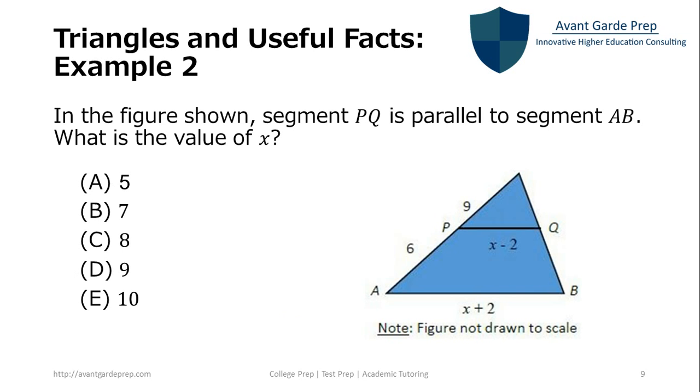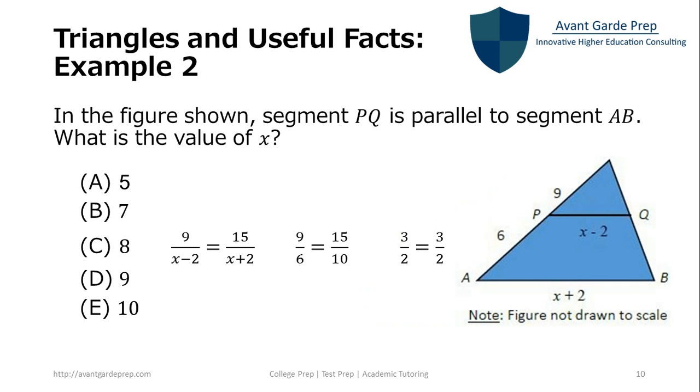Let's take a look at our next example. Example 2 reads: In the figure shown, segment PQ is parallel to segment AB. What is the value of x? So we know that PQ is parallel to AB, which means we have similar triangles. Now to solve this problem, we need to set up a proportion. Since we have some variables in there, we can use the trial and error method. So we want to first look at answer choice c, since we're going to use the trial and error method.